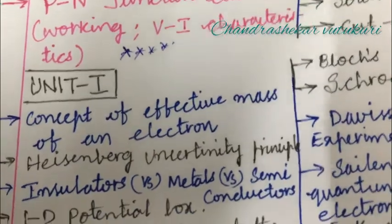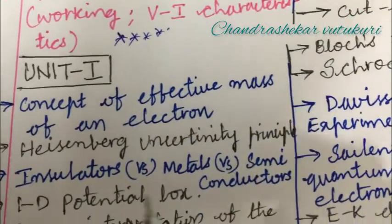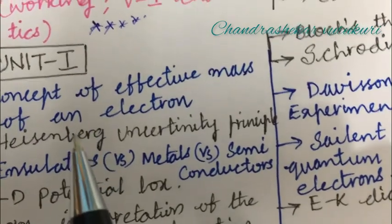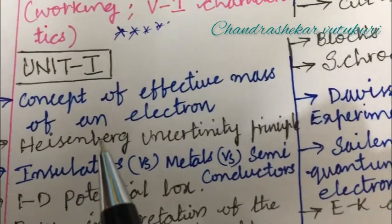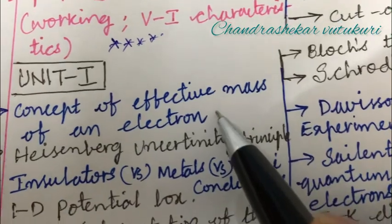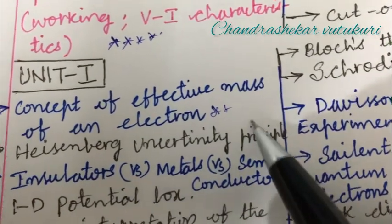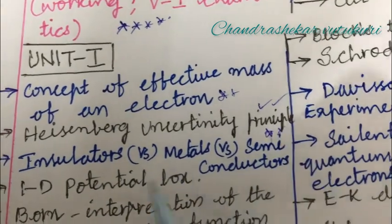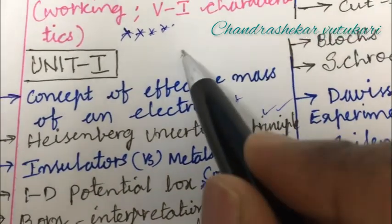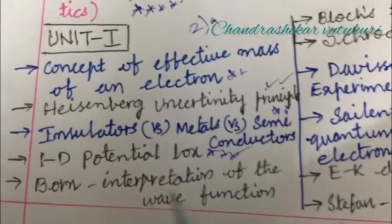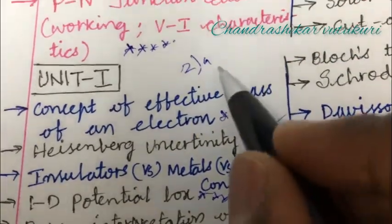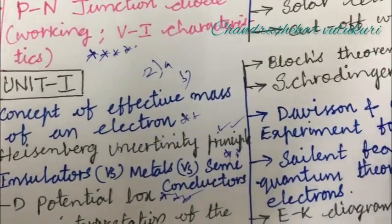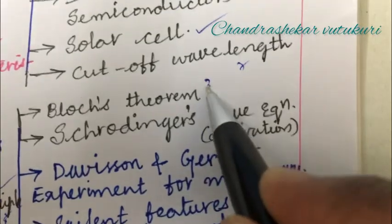Later, Unit 1 is band length in its structure. You might have read it for mid-examination one, so you need to concentrate on it once again. Concept of effective mass of an electron is examination one. Heisenberg uncertainty principle is a very important question. Insulator versus metal versus semiconductors, and 1D potential box are also very important questions which may occur in 2A. Interpretation of the wave function is a B question. From this you will get 2AB. In the first question, you are going to get 1AB.